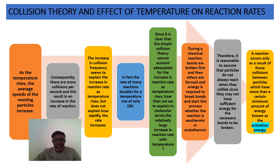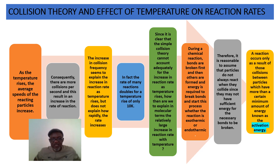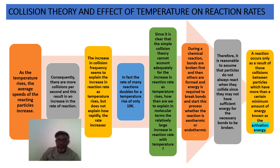The increase in collision frequency seems to explain the increase in reaction rate as temperature rises, but does not explain how rapidly the rate increases. In fact, the rate of many reactions doubles for a temperature rise of only 10 K — that is 10 Kelvin. So there's a difference: with a 10 Kelvin temperature rise, the rate of reaction doubles, and that's what we want to find out — the reason for that.